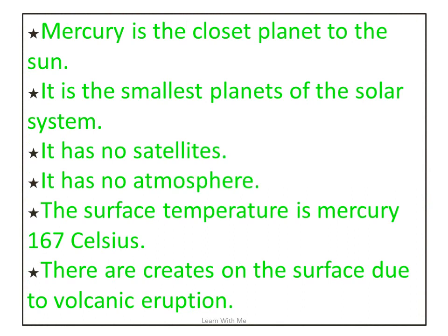Mercury is the smallest planet of the solar system. It has no satellite and no atmosphere. The surface temperature of Mercury is 167 degrees Celsius. Craters appear on its surface due to volcanic abrasion.